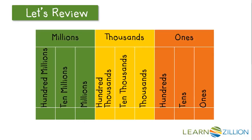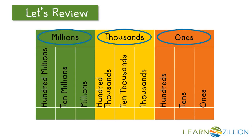Let's review our place value chart. Our place value chart is represented by different periods. We have our ones, thousands, and then millions. Within each of these periods, we have three sections: our units, then tens, and then hundreds.